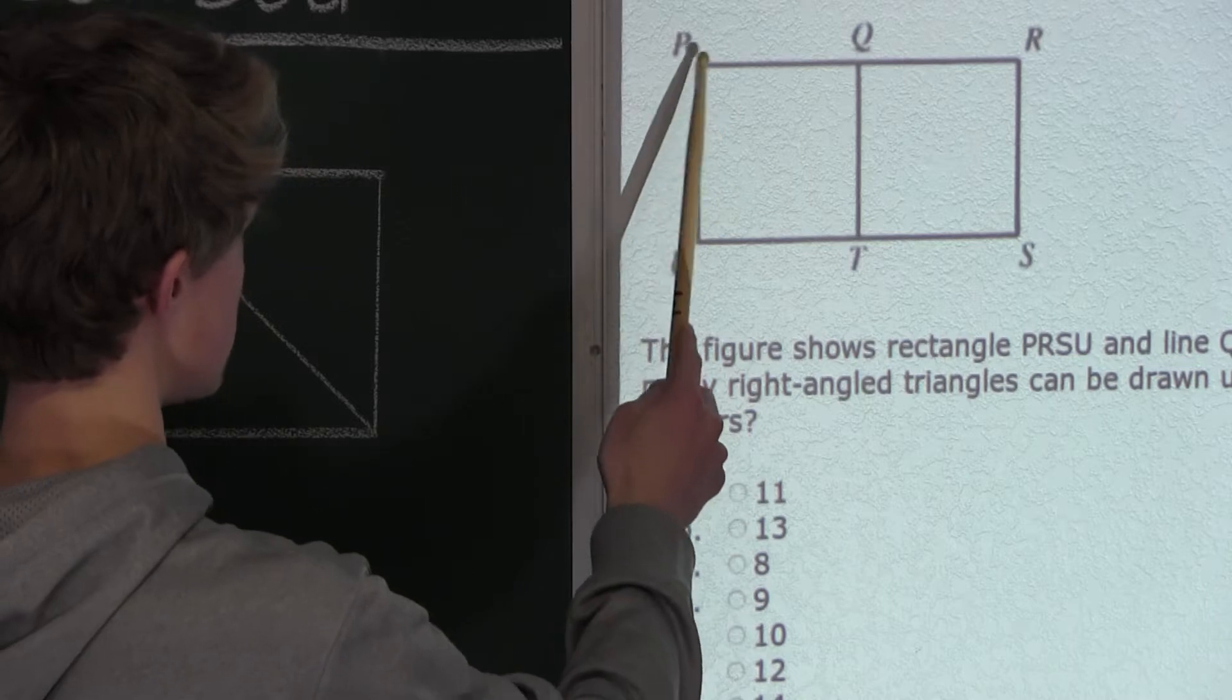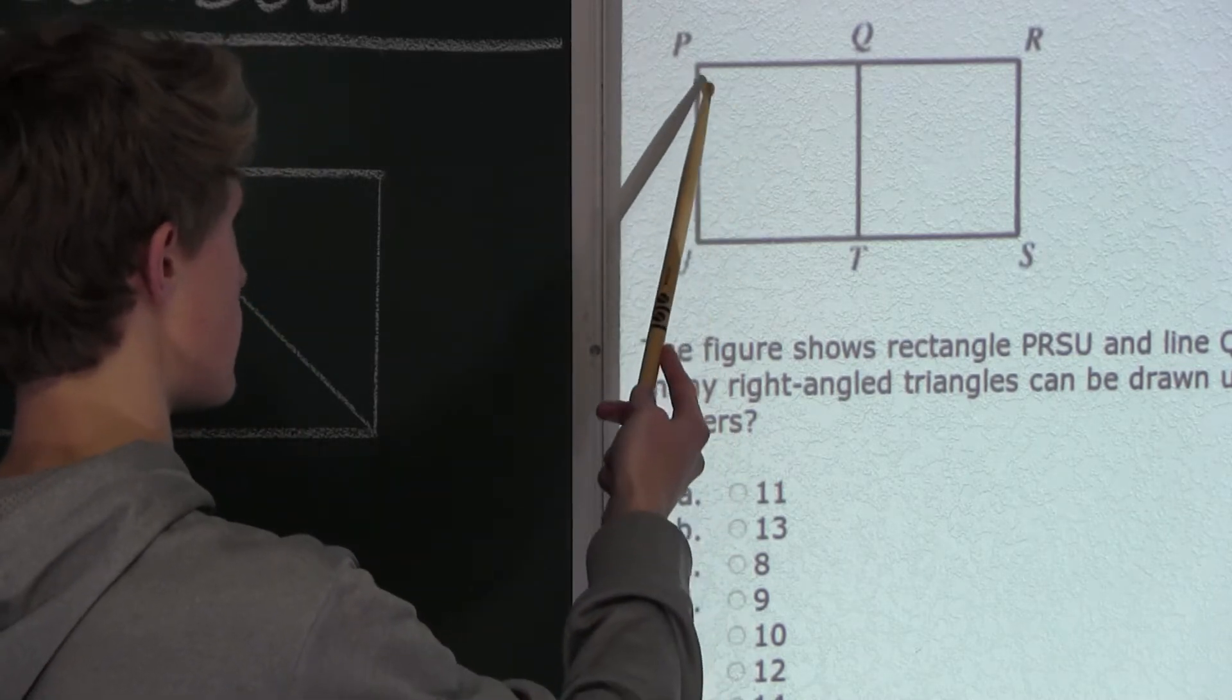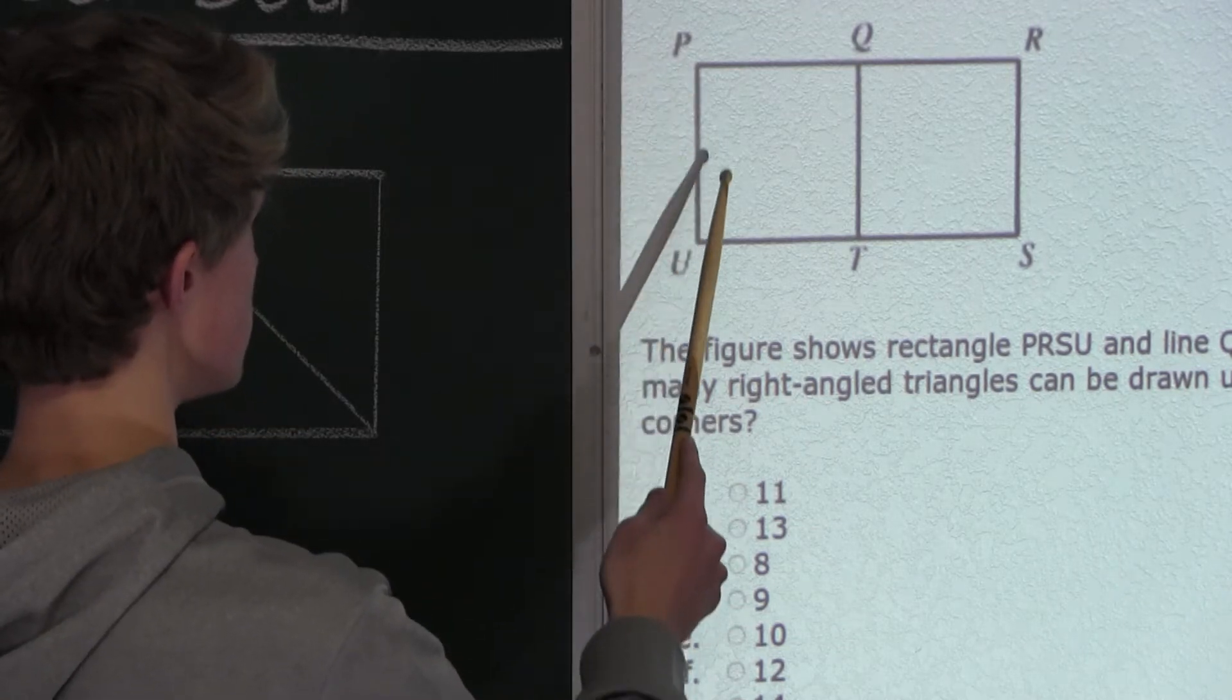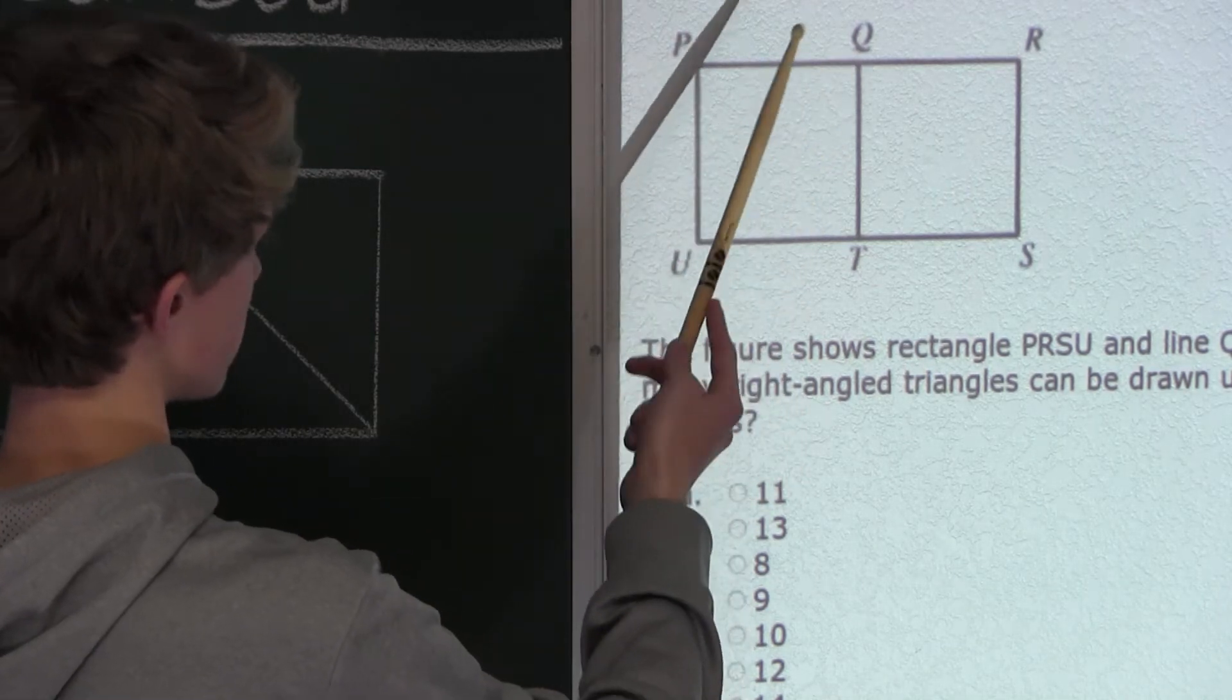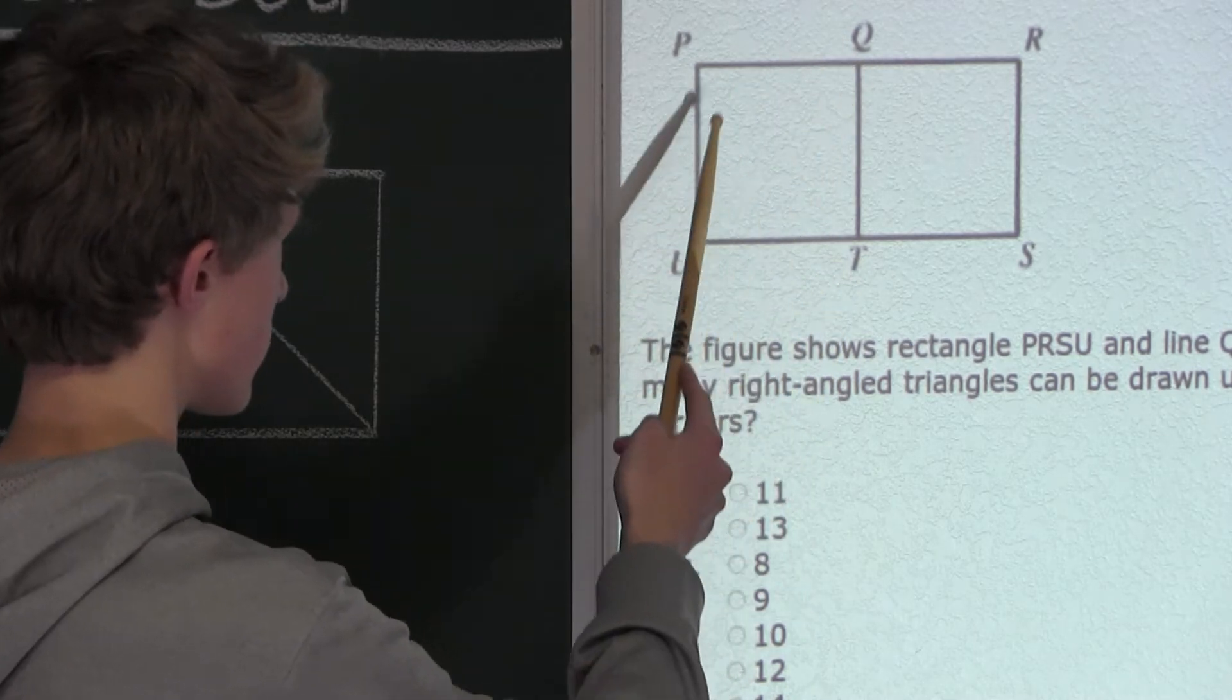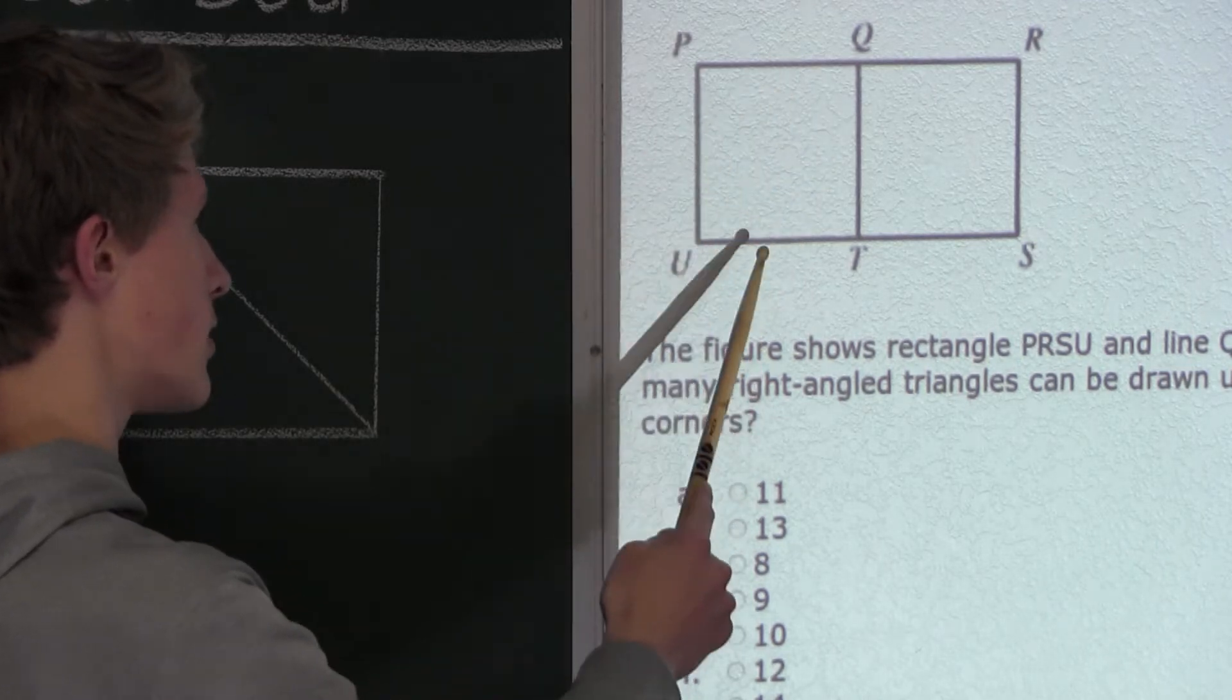And with each of these right angles, a right-angled triangle can be made to that corresponding right angle. So for example, for corner P with this right angle, the right-angled triangle would be here. And for Q, it would be here, and so on. So since we know there are four corners, four right-angled triangles can be made within this square.